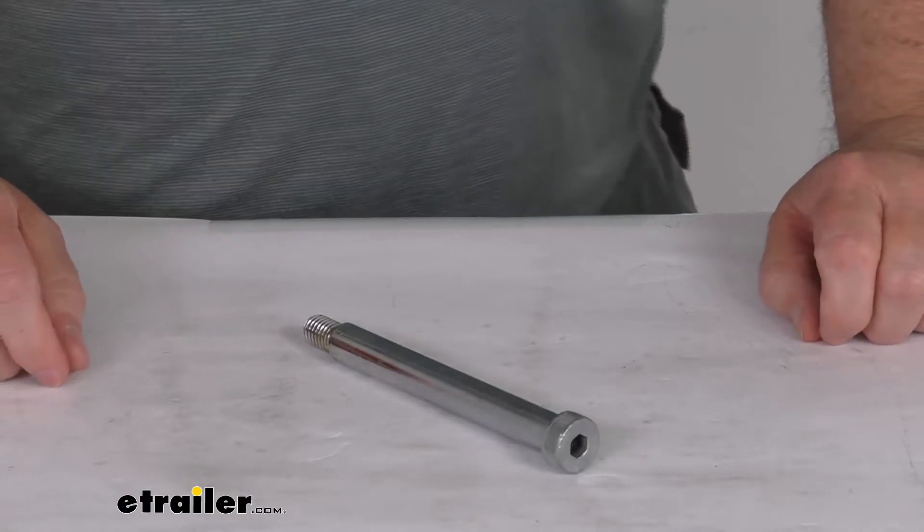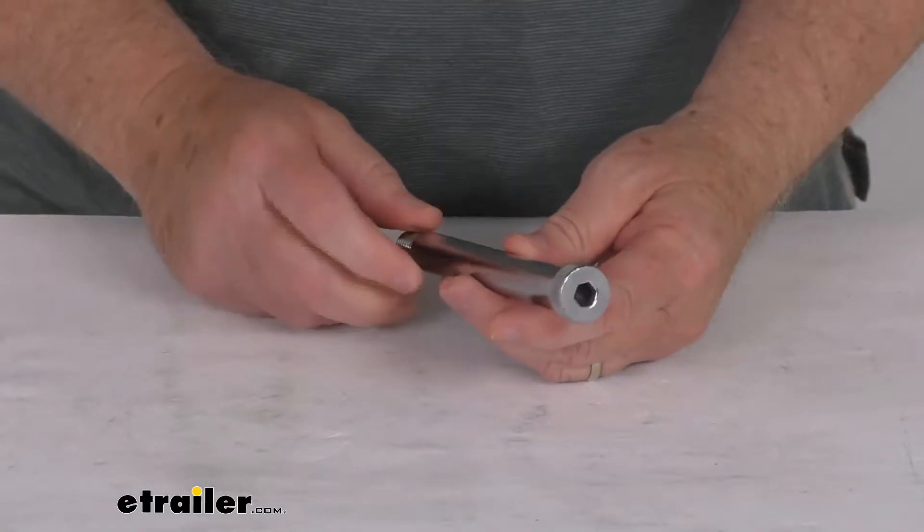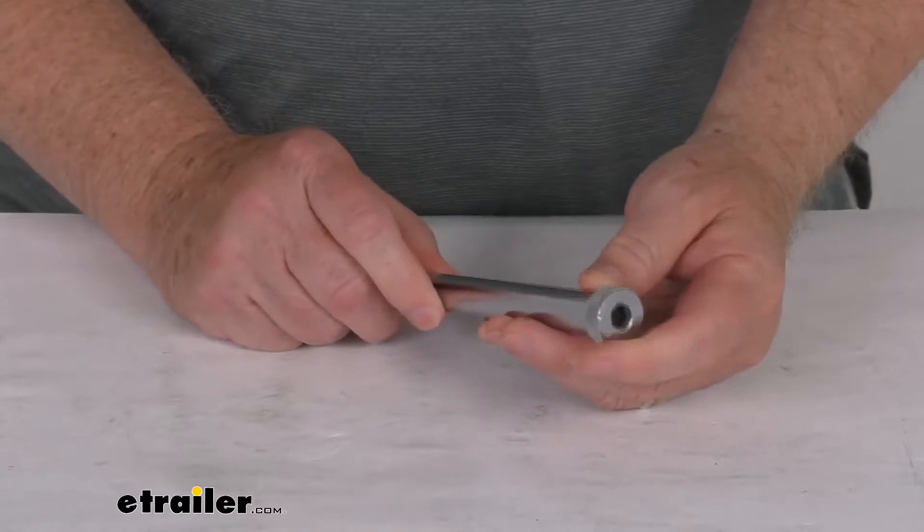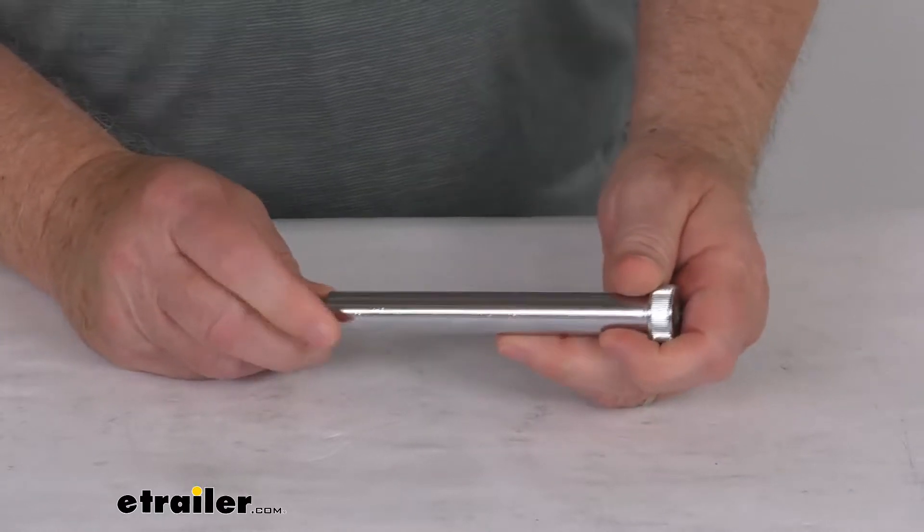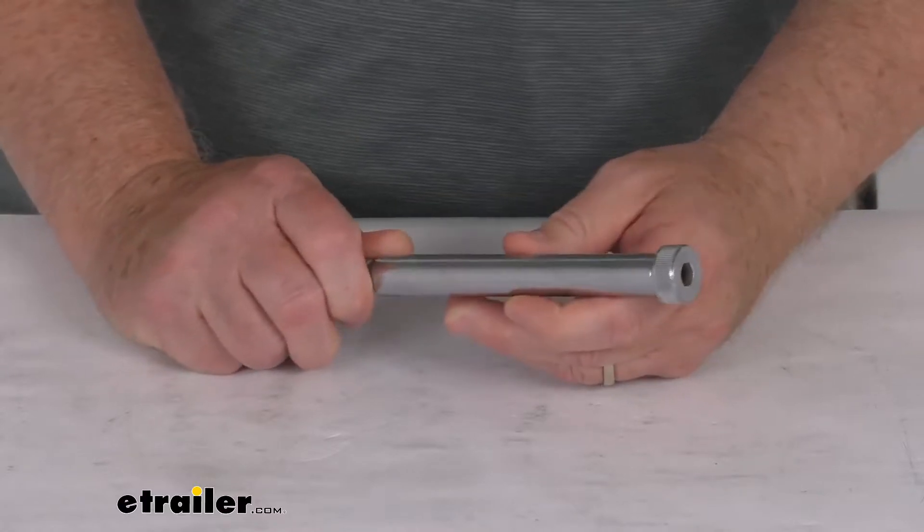Hello everybody, this is Jeff at eTrailer.com. Today we're going to take a look at this replacement caliper retaining shoulder bolt for the Dexter 10,000 to 12,000 pound hydraulic disc brakes.